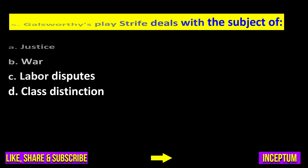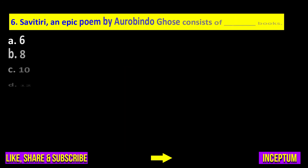Question number five: Galsworthy's play 'Strife' deals with the subject of — justice, war, labor disputes, or class distinction? The right answer is option C: labor disputes.